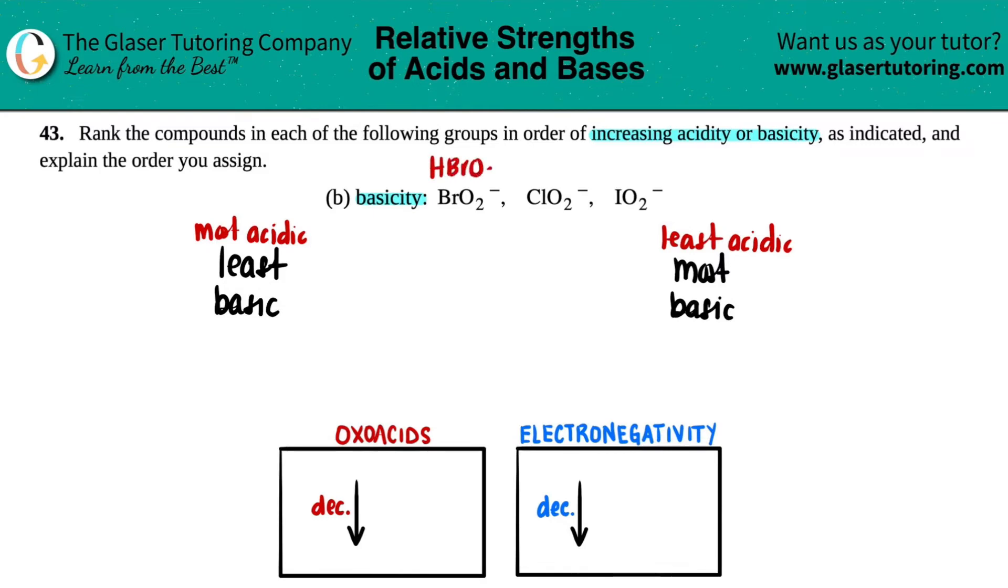If you've noticed, now we have all hydrogens in the front, oxygens in the back, and a random element in the middle—in this case, bromine, chlorine, and iodine. These are oxo acids, and we have a trend for that. As you go down a periodic table, your acidity for oxo acids will decrease.